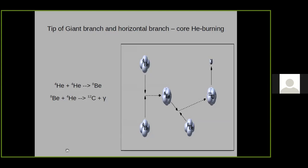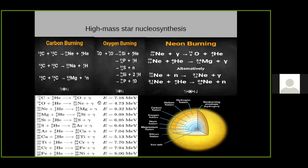When the star reaches the end of the RGB stage, helium is the main energy source. This helium burning produces carbon-12 as the main product. Carbon-12 is the main base of our life — that's why we say we are made of star dust.